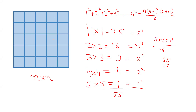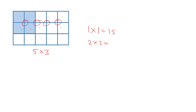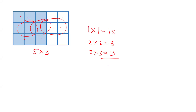Now in case there is a grid of 5 by 3, how many squares are there? The process will be the same. 1 by 1 squares: there are 5 × 3 = 15 squares. Then we have 2 by 2 squares: there are 4 in each row of two rows, so 8 squares of 2 by 2. Then we have 3 by 3 squares: there are 3 such squares. But there are no squares of size 4 by 4. Total number of squares will be 15 + 8 + 3 = 26. There are 26 squares.